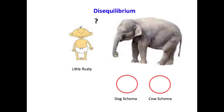Now let's think about what might happen next. Little Rusty has a dog schema and a cow schema. If he sees a dog, he can assimilate it. If he sees a cow, he can assimilate it. Assimilation means that they fold neatly into existing folders. But now he sees something new, and he's going to say dog, and Mama's going to say, no, it's not a dog, Puckin. And he's going to say, cow? And Mama's going to say, no, it's not a cow. Little Rusty's head hurts, and the mother says, that is an elephant. So he's in disequilibrium.